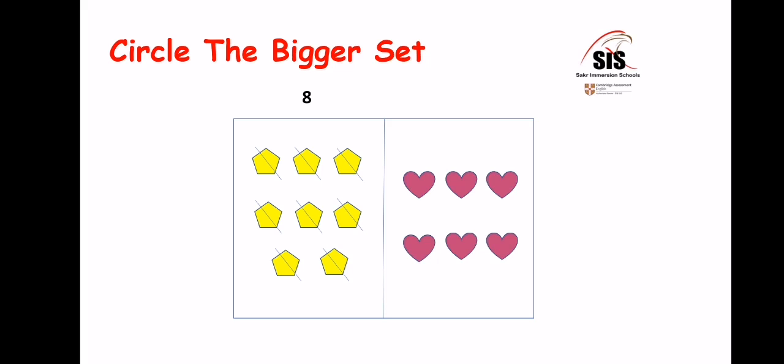One, two, three, four, five, six. This set has six shapes — write six above it. As eight is bigger than six, we're going to put a circle around the set of eight shapes.